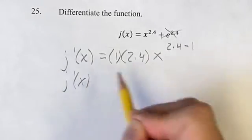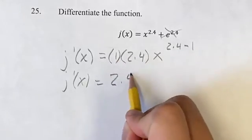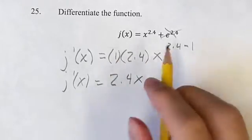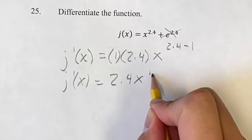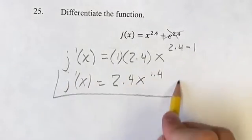Now we can just simplify this. Our derivative is going to be 1 times 2.4, which is 2.4, times x to the 2.4 minus 1 is 1.4. This is going to be your final answer.